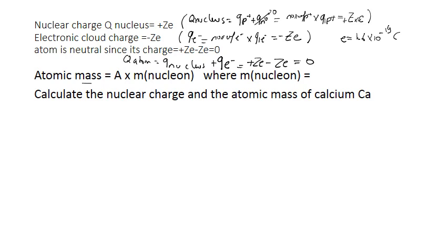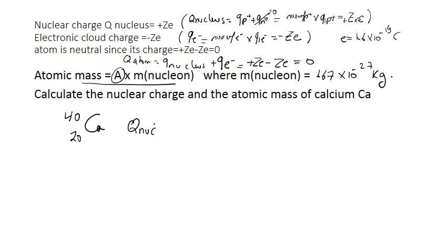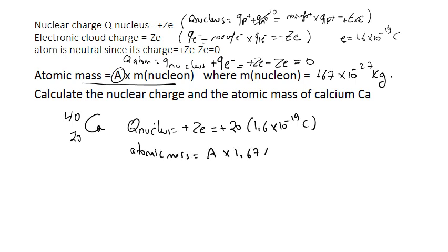To find atomic mass, the rule is: atomic mass equals A (mass number) times the mass of one nucleon, where mass of one nucleon equals 1.67 times 10 to the power minus 27 kg. For example, for calcium with mass number 40 and atomic number 20, the charge of the nucleus equals 20 times 1.6 times 10 to the power minus 19 coulombs, and atomic mass equals 40 times 1.67 times 10 to the power minus 27 kg.